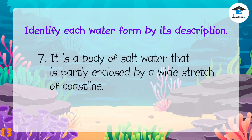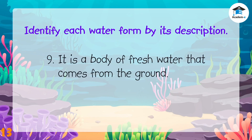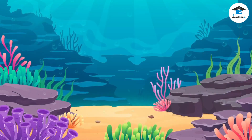It is a body of saltwater that is partly enclosed by a wide stretch of coastline — the answer is bay. It is a body of water that is smaller than a river — the answer is stream. It is a body of fresh water that comes from the ground — the answer is spring. Did you get the correct answers? Good job!